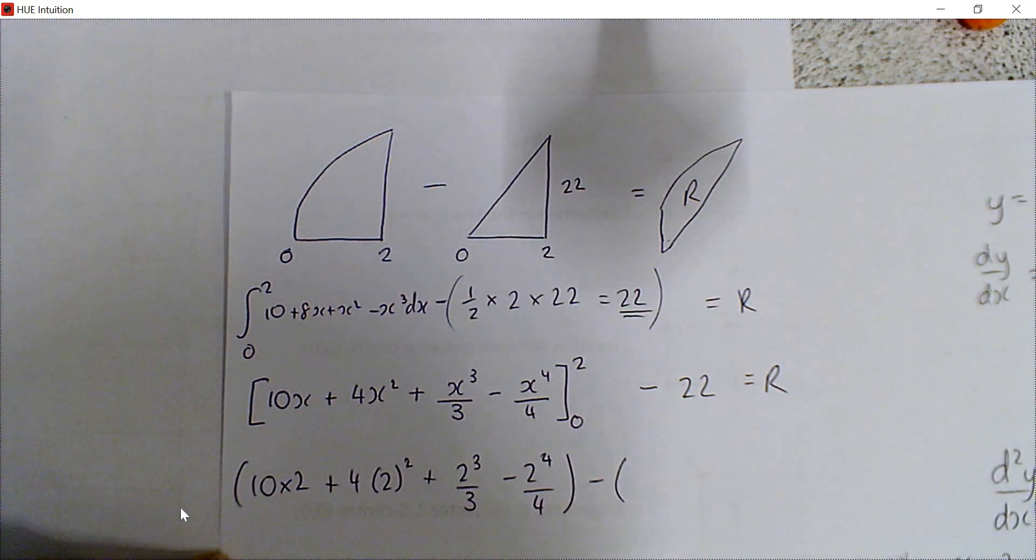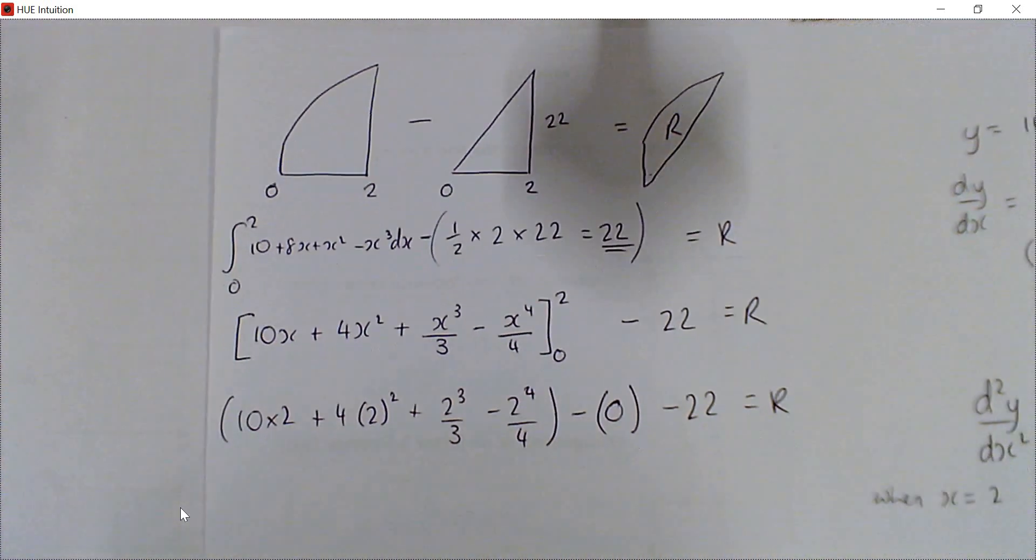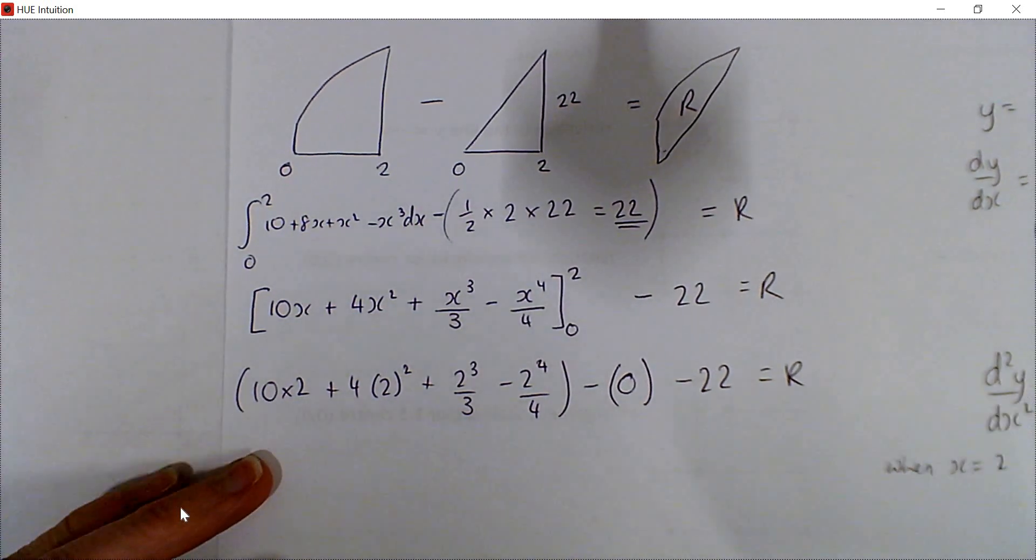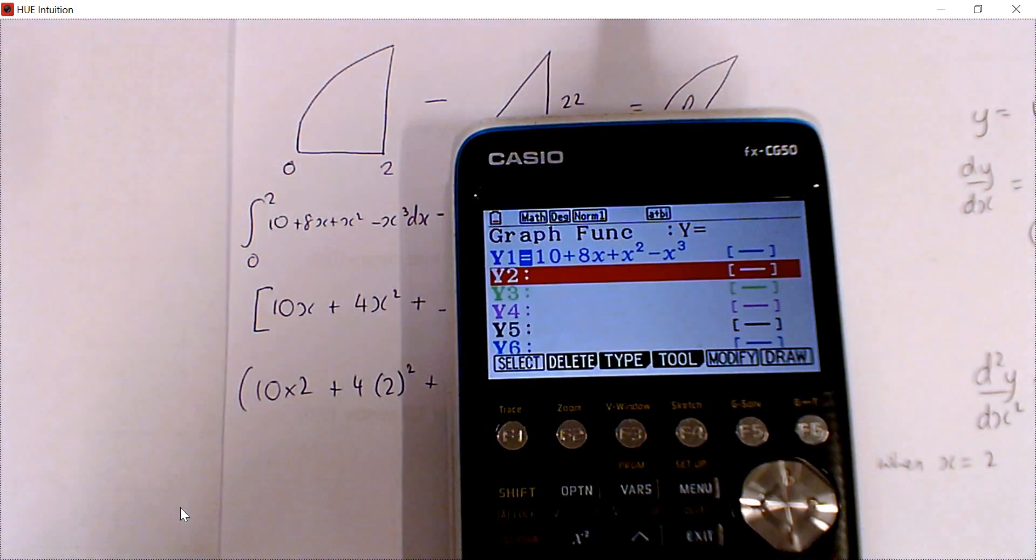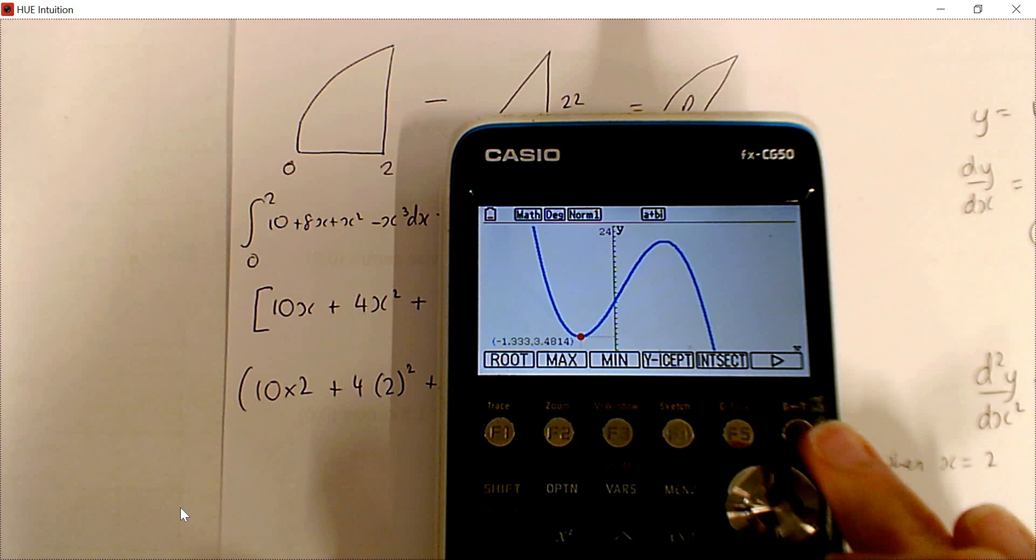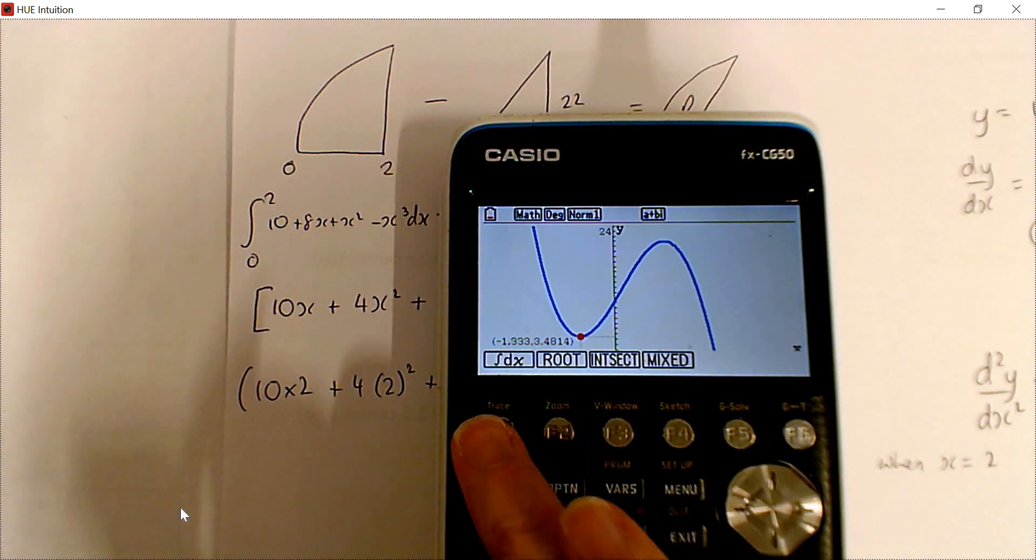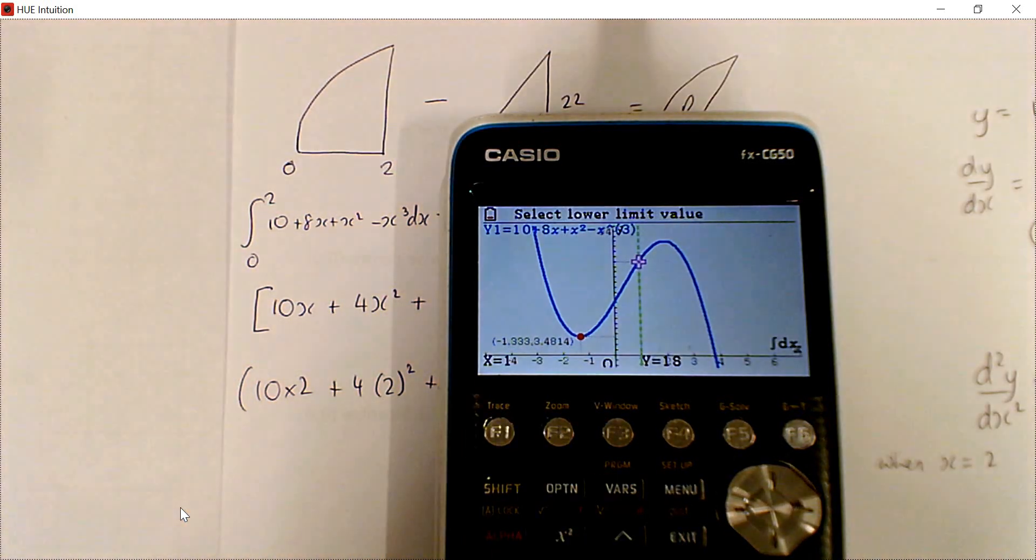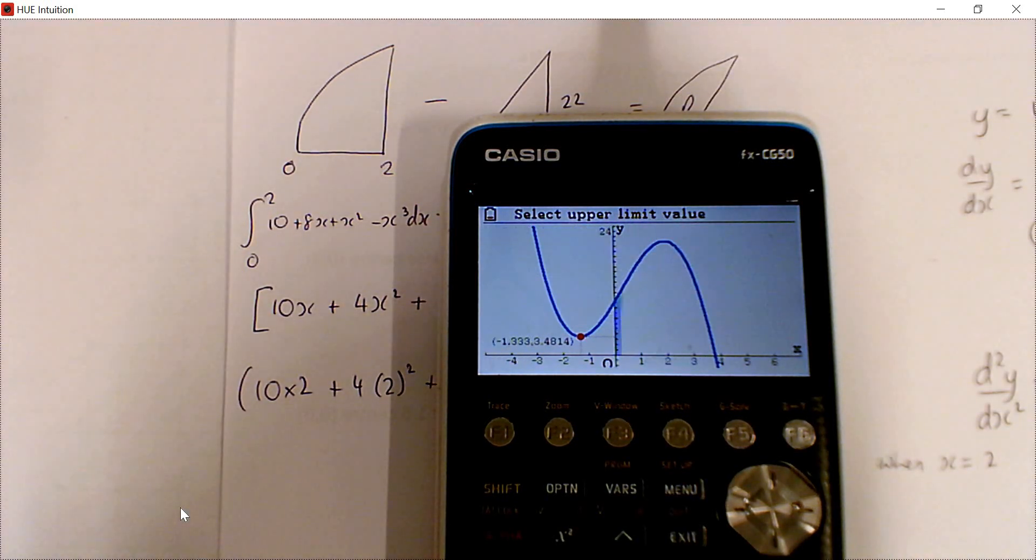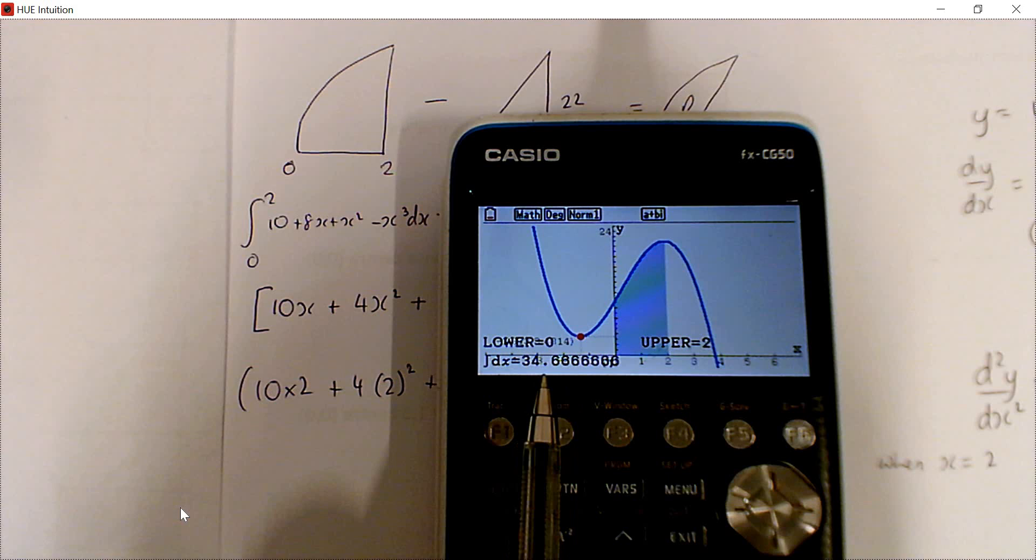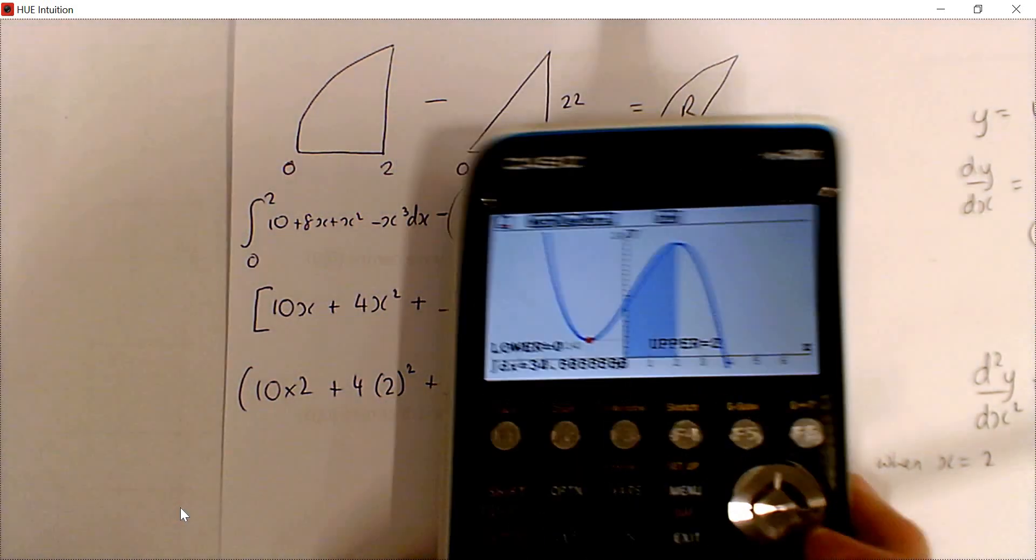We need to substitute in our top limit, which is when x is 2, and then subtract the bottom limit. So we've got 10 times 2 plus 4 times 2 squared plus 2 cubed over 3 minus 2 to the 4 over 4. And if you put 0 into any of those terms, you just get 0. We can type all those numbers in carefully and work it out, or we could use g-solve, press F6 and use integrate. I want to integrate from 0 to 2. That gives me 34 and 2 thirds. It's all above the x-axis, so that would be the area. 34 and 2 thirds.